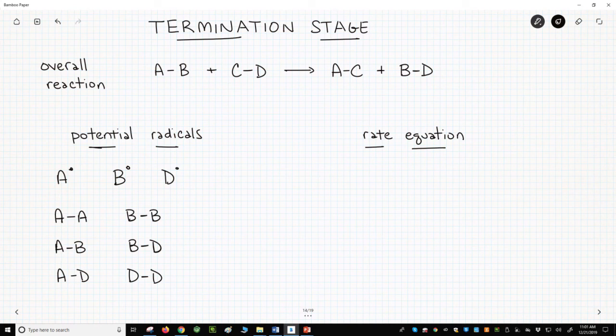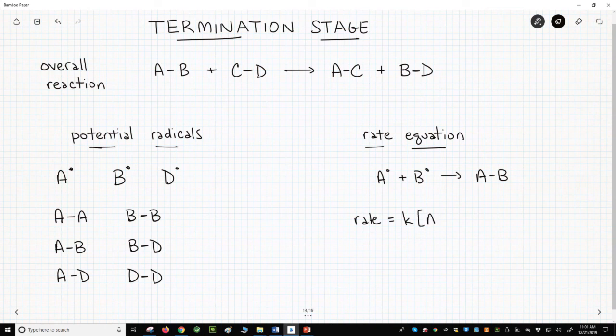Let's look at the rate equation for the reaction of A dot plus B dot going to AB. The rate will be equal to k times the concentration of A dot times B dot. This is a second-order reaction.